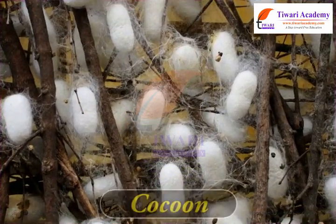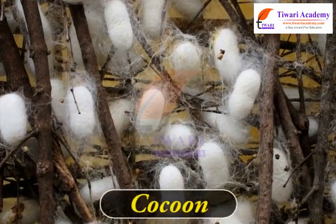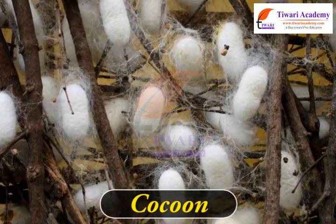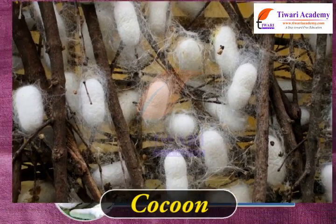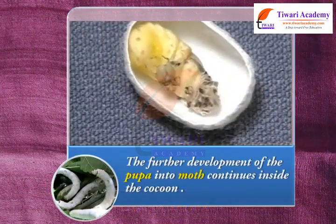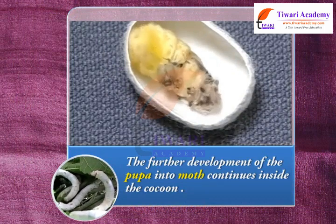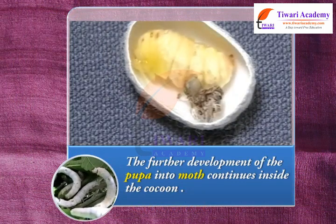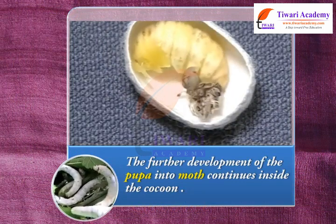Soon the caterpillar completely covers itself with silk fibers and turns into a pupa. This covering is known as a cocoon. The further development of the pupa into a moth continues inside the cocoon.